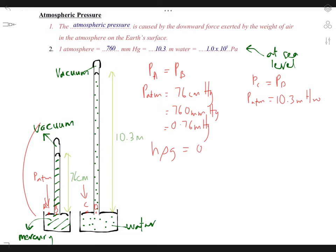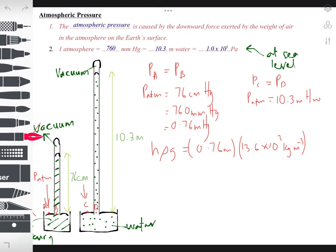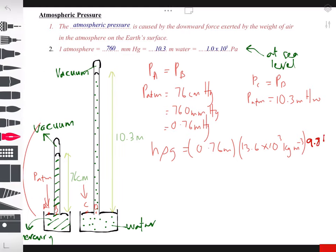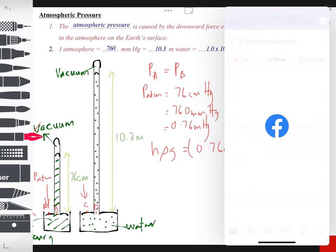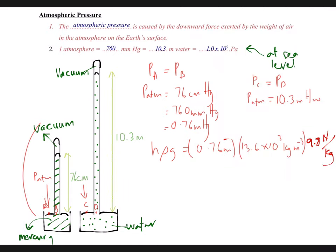Let us look at this one: 0.76 meter multiplied by density. Density of mercury is 13.6 times 10 power 3, and the unit is kilogram per meter cube, multiplied by g. g is 9.8 newton per kilogram.